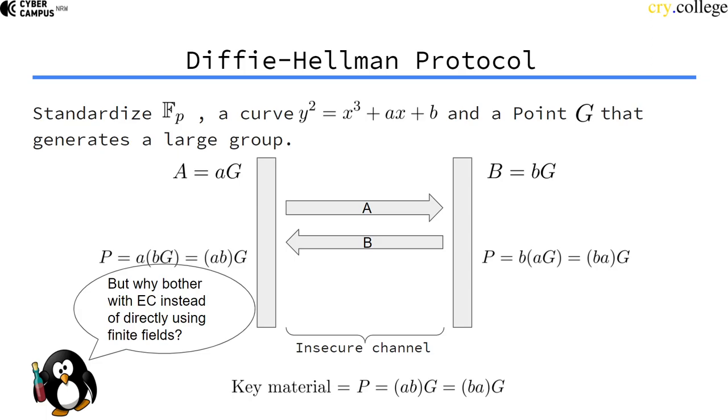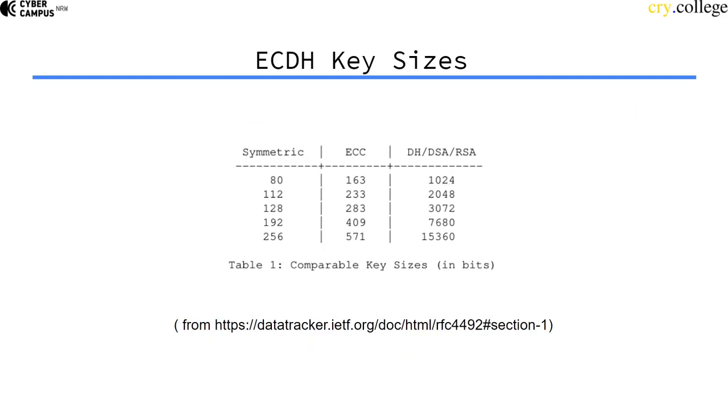This is exactly the same thing as finite fields Diffie-Hellman, right? So, why do we even bother doing elliptic curve things instead of directly using finite fields? And I've already mentioned that earlier.